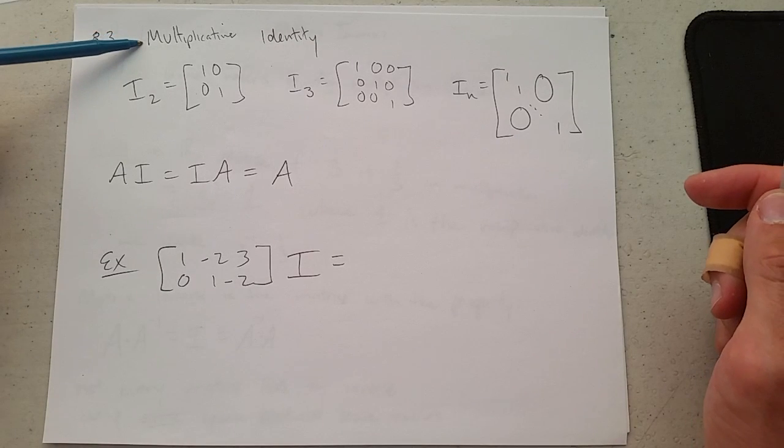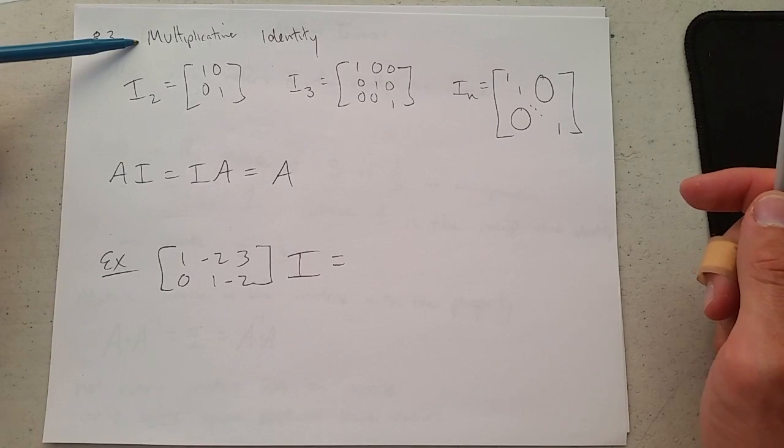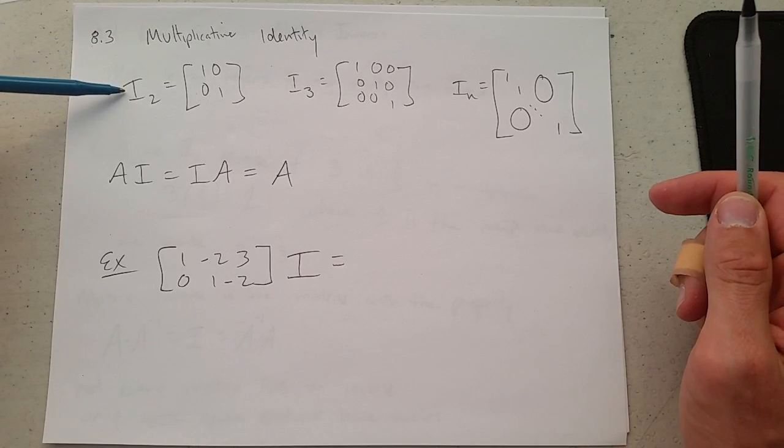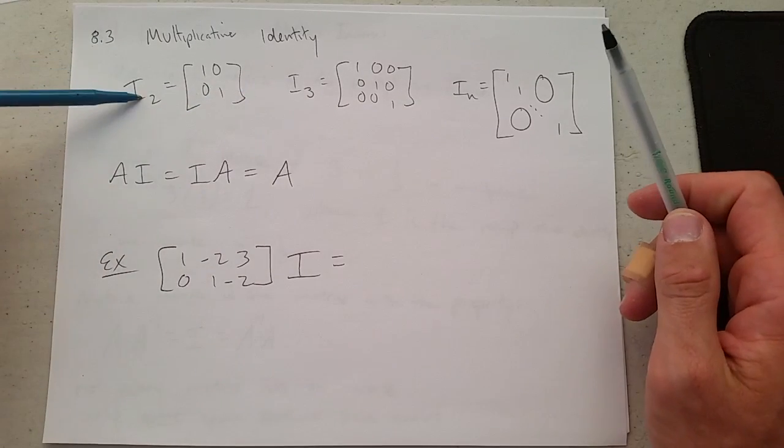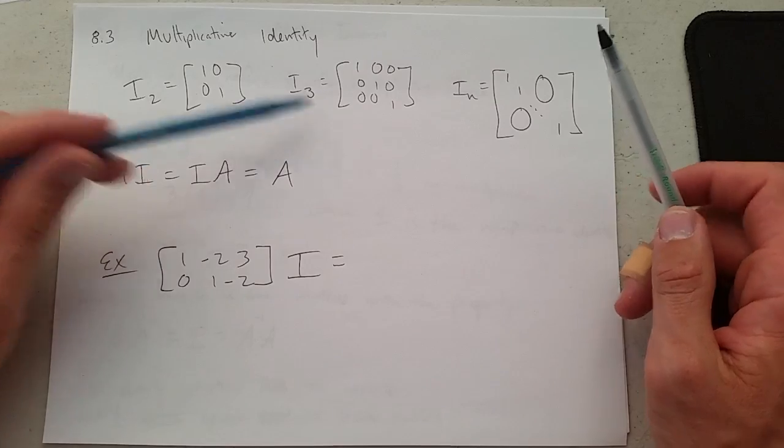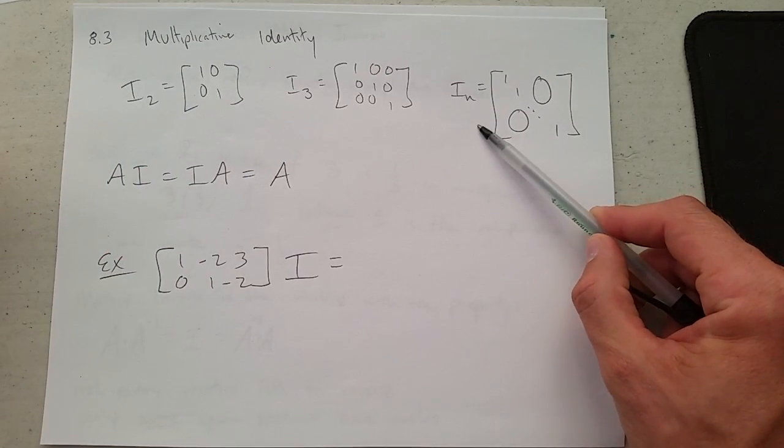So we have the identity matrix, and it refers to the multiplicative identity. So here are the 2x2 identity matrix, 3x3 identity matrix, and the nxn identity matrix.